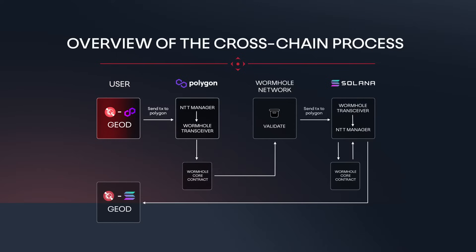When a user sends GLD tokens on the Polygon network to the designated smart contract, the tokens are securely locked within the contract, making them inaccessible for use. This locking process is overseen by a group of validators on the Wormhole network,